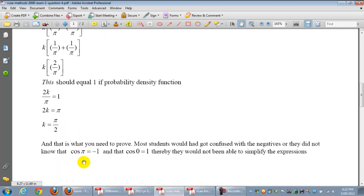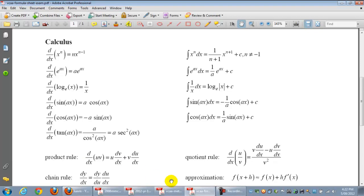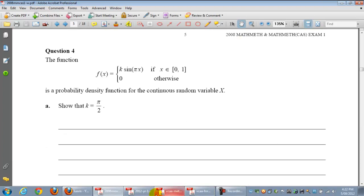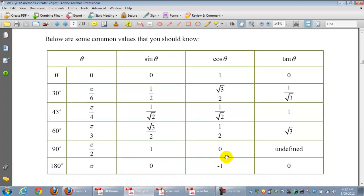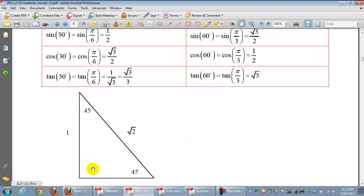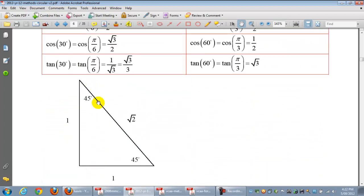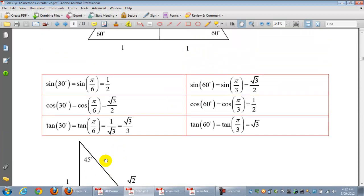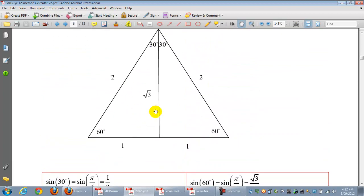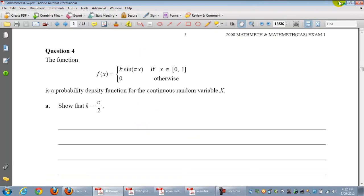So students would have got confused with the negatives, and students might not have known these two vital little facts. We need to be able to commit to memory quite a few things, particularly to do with these standard values, with 0, 30 degrees, 45, 60, 90, 180 degrees. And there's a variety of ways. One of the ways I suggest is students don't need to memorize all of them. They just need to memorize these two triangles, the 45 and 45, and the 60 and 30 triangle. But that might be another video, another time.